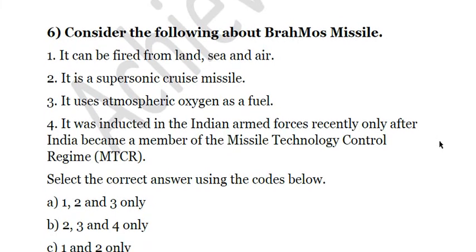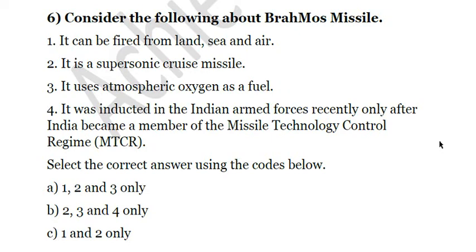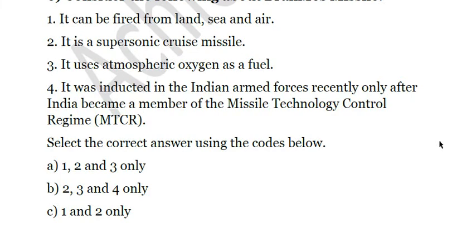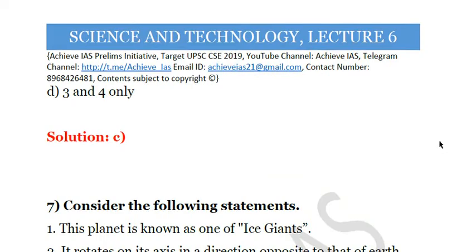Next question: consider the following about BrahMos missile. First, it can be fired from land, sea, and air. Second, it is a supersonic cruise missile. Third, it uses atmospheric oxygen as fuel. Fourth, it was inducted into the Indian armed forces only after India became a member of the Missile Technology Control Regime. The answer is 1 and 2 only. BrahMos is a supersonic cruise missile that can achieve a maximum speed of Mach 3 and can be fired from land, sea, and air. It was jointly developed by India and Russia and is a two-stage missile with one stage of solid propellant and one stage of ramjet liquid propellant. Solution is C.